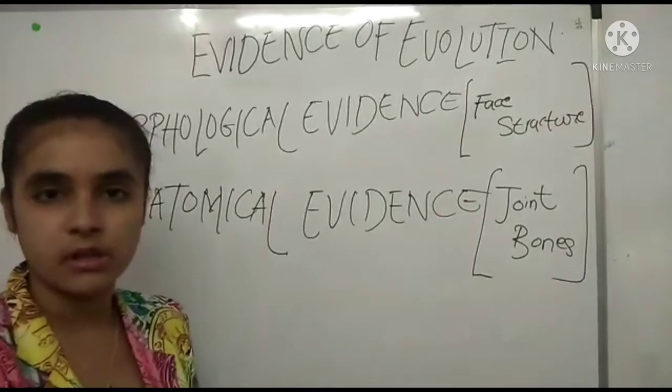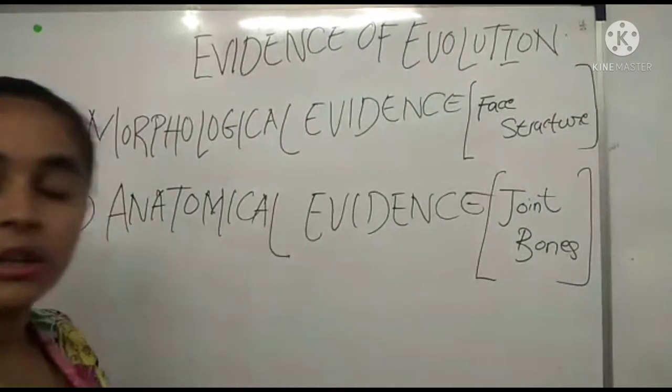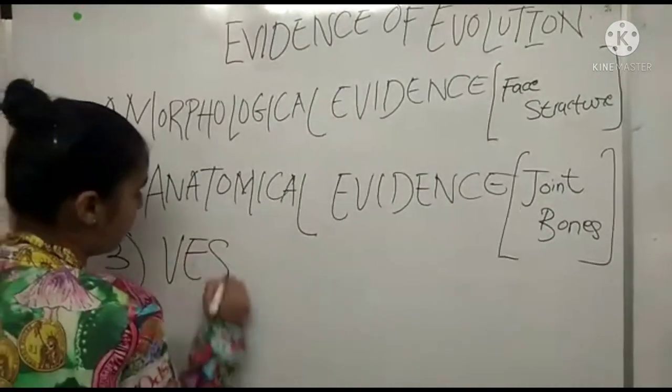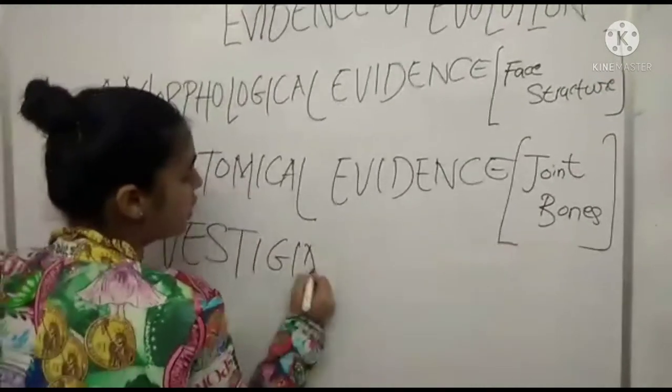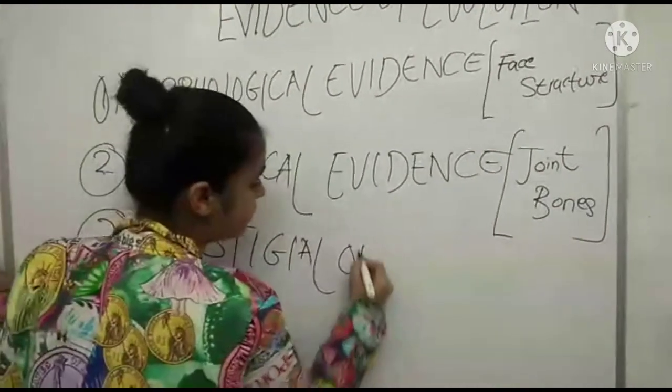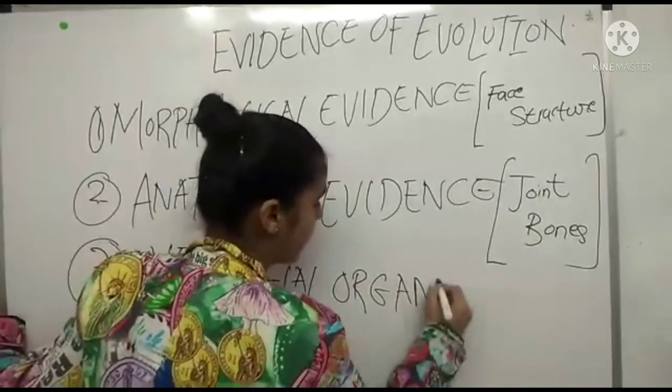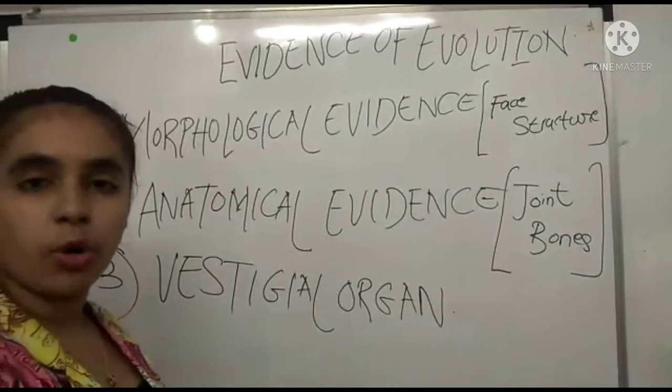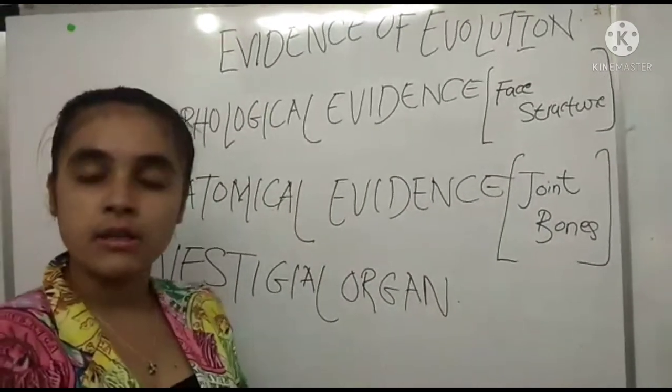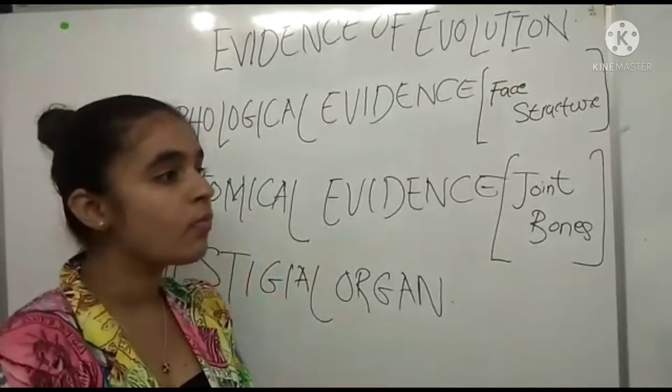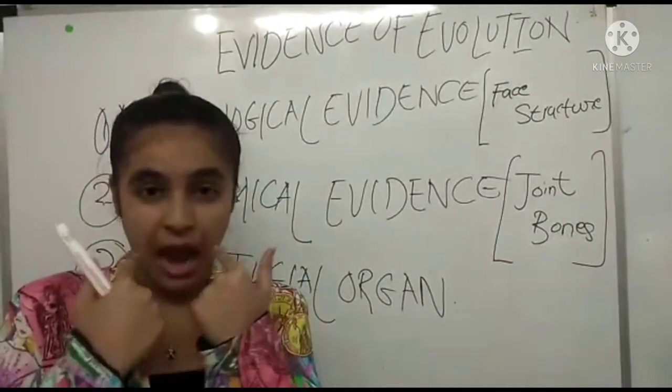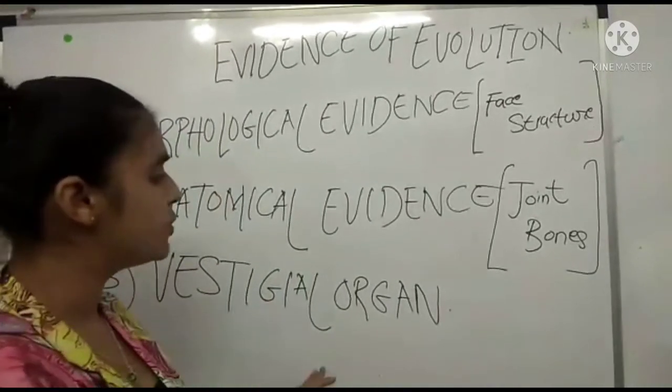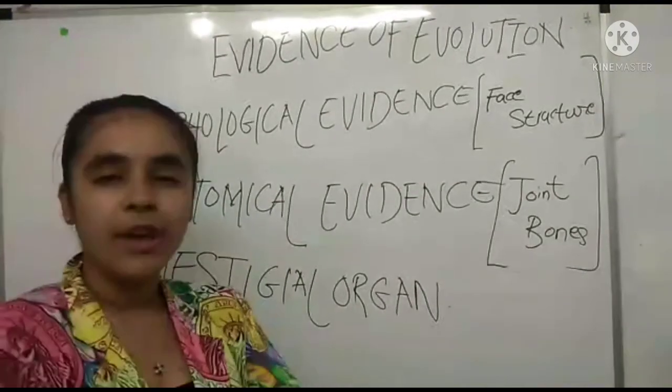Our third one is vestigial organ. Vestigial organs, these are the useless organs in our body. Organs like appendix, pinna and wisdom teeth here at the end are useless organs in our body which are not useful.